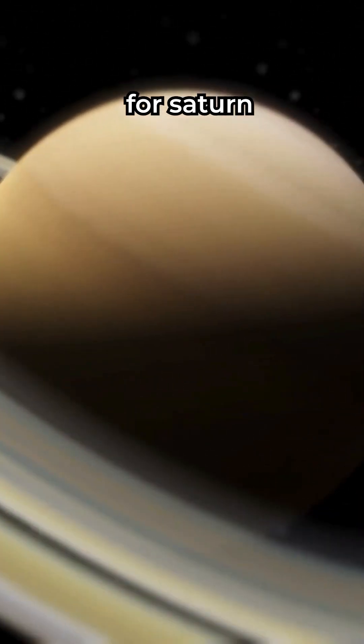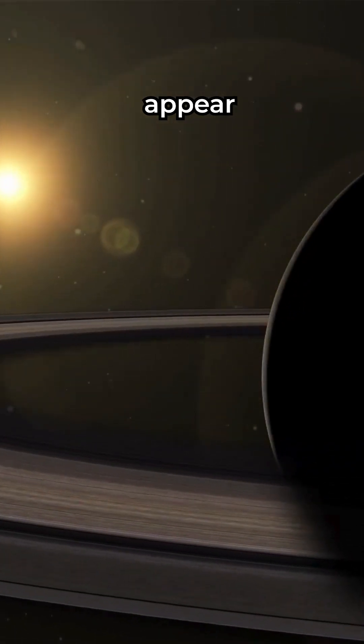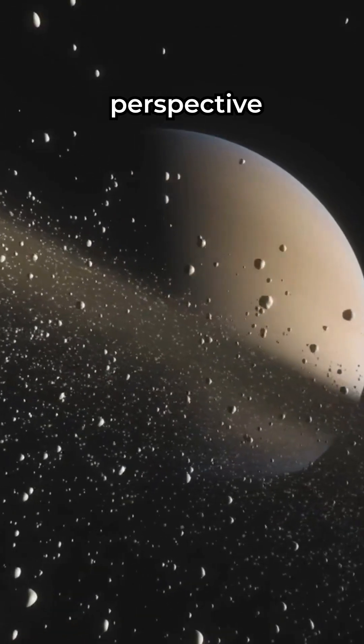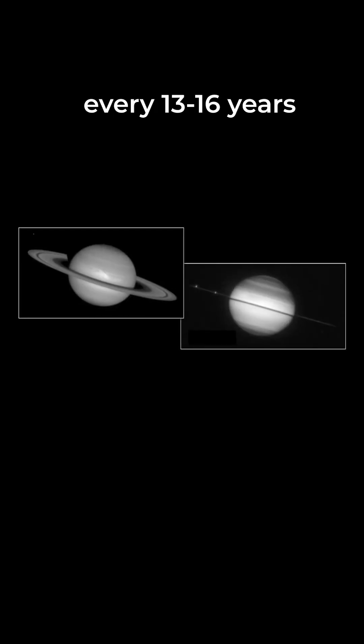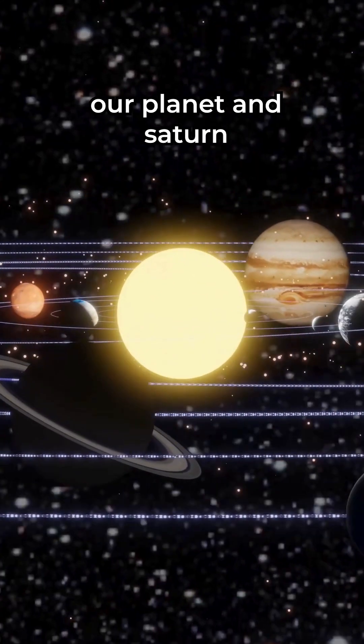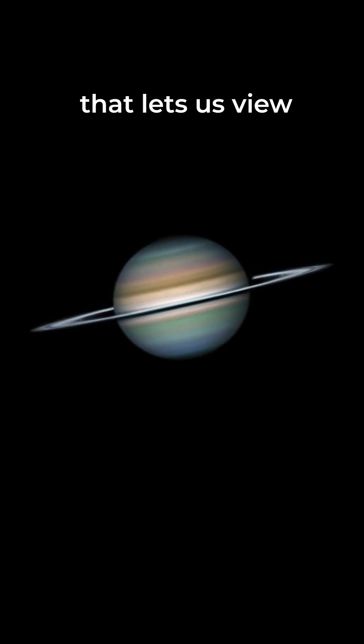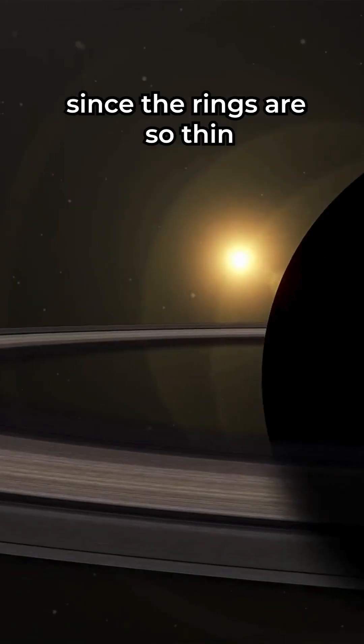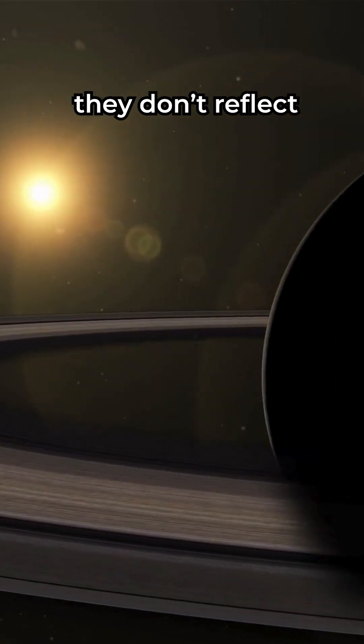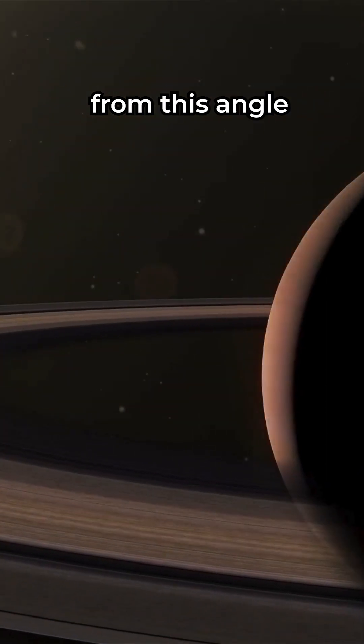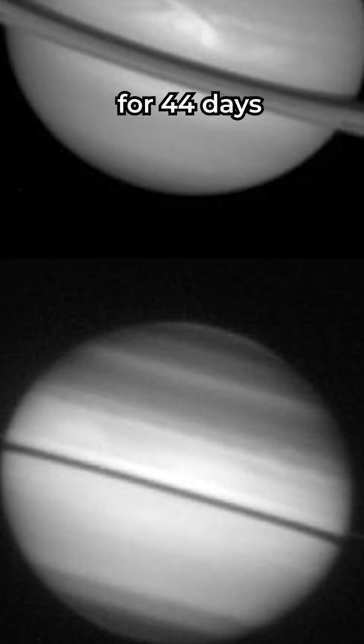2025 is a special year for Saturn. The gas giant will temporarily appear to lose its rings from Earth's perspective, which happens every 13 to 16 years. Our planet and Saturn become situated in a way that lets us view its rings edge-on. Since the rings are so thin, they don't reflect much light when we see them from this angle. As such, they'll seemingly disappear for 44 days.